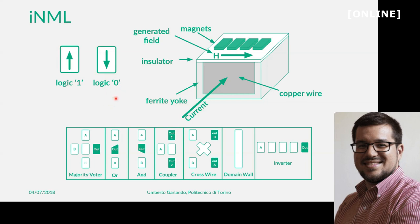We can propagate logic by placing magnets one near the other. The clock mechanism uses a wire below the magnets plane — current flowing in the wire forces the magnets into an unstable state, and when the current stops, the magnets propagate the information. The basic blocks of INML include a majority voter as the basic logic gate, plus AND and OR gates and other components.